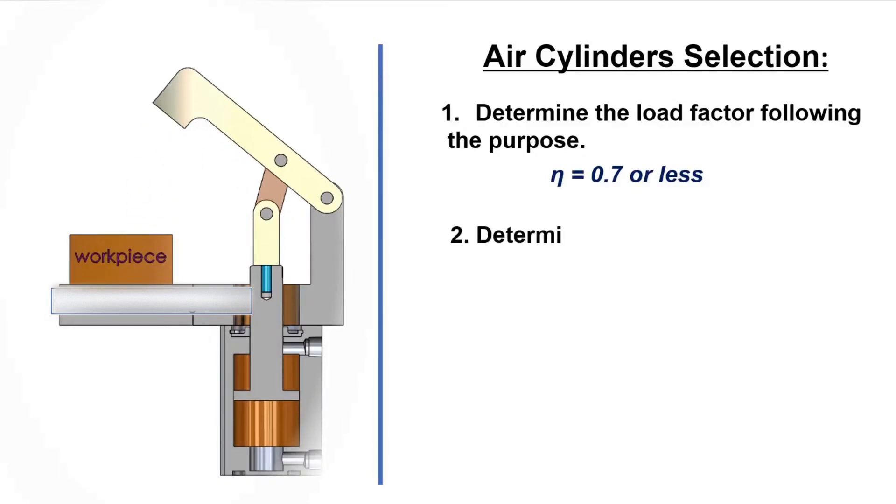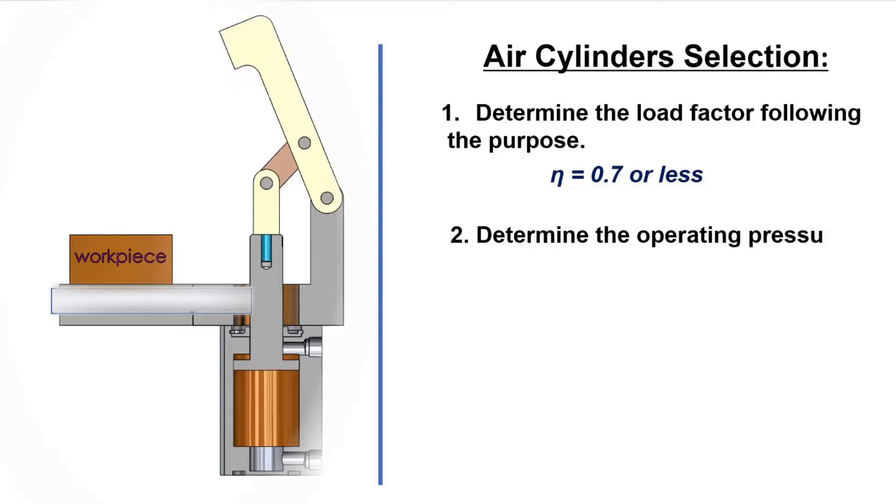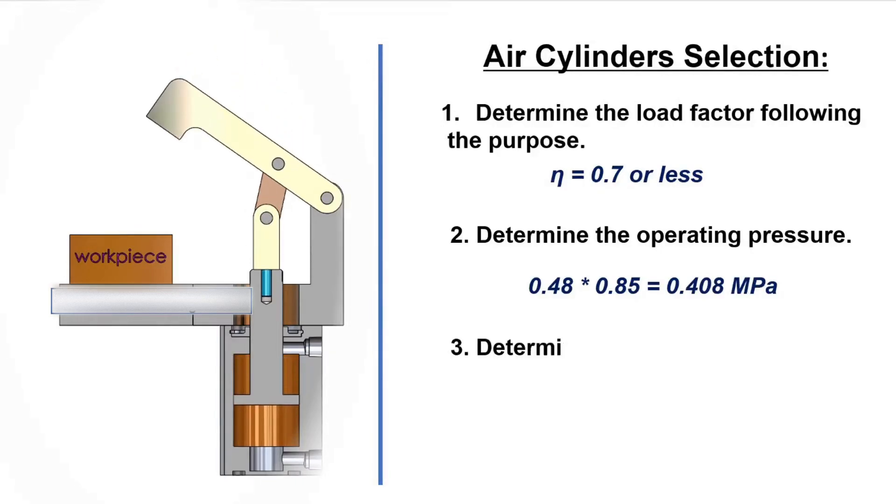Second, determine the operating pressure. Generally, set the regulator to 85% of the source air pressure.